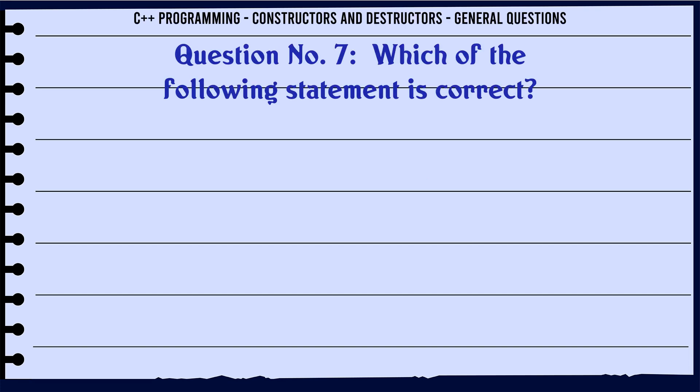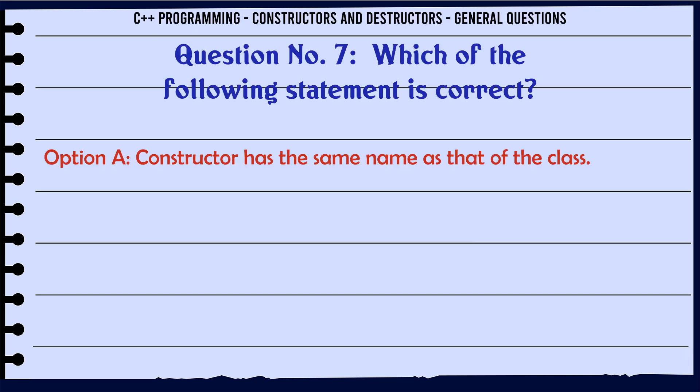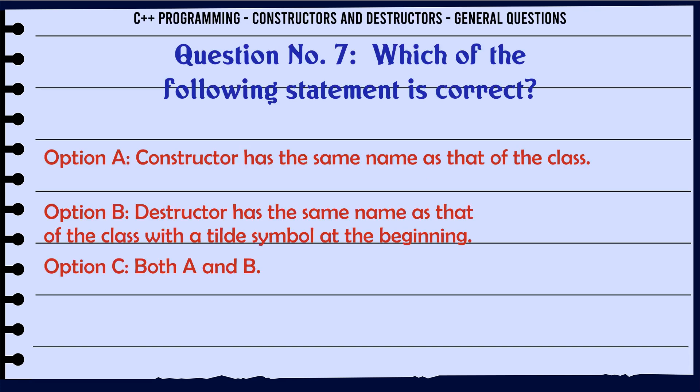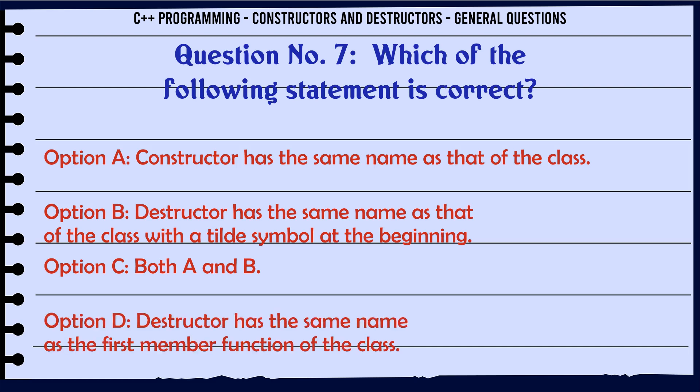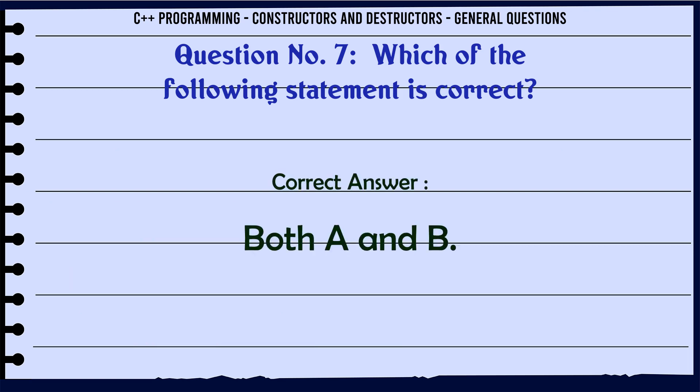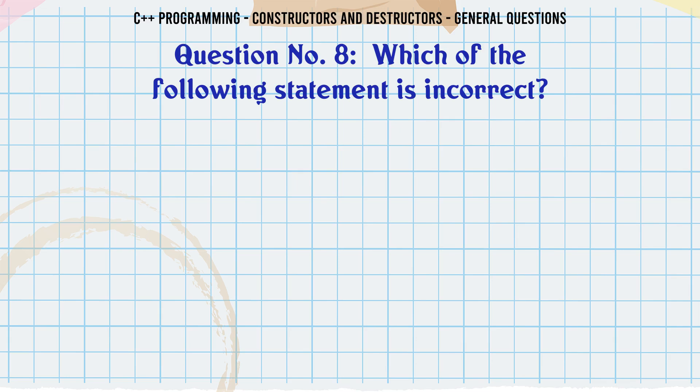Which of the following statements is correct? A. Constructor has the same name as that of the class. B. Destructor has the same name as that of the class with a tilde symbol at the beginning. C. Both A and B. D. Destructor has the same name as the first member function of the class. The correct answer is Both A and B.